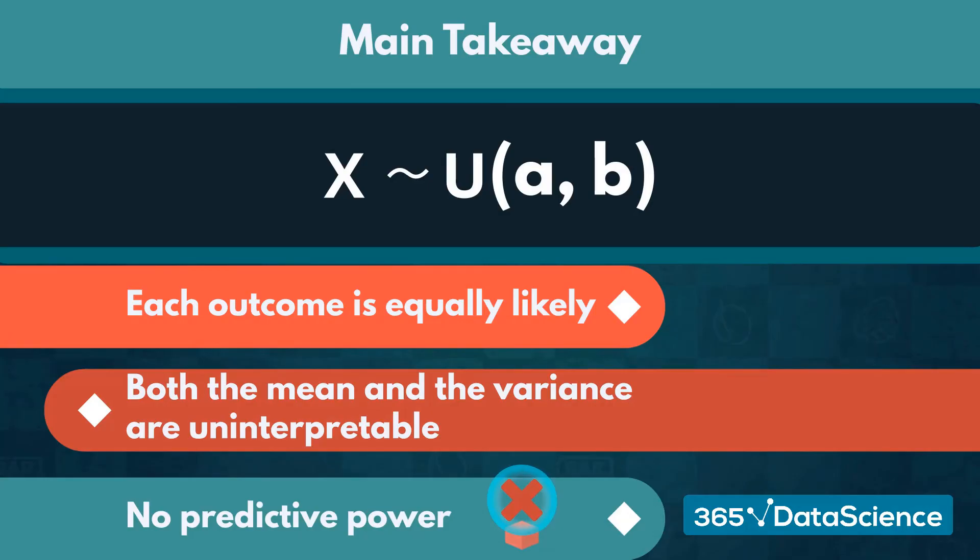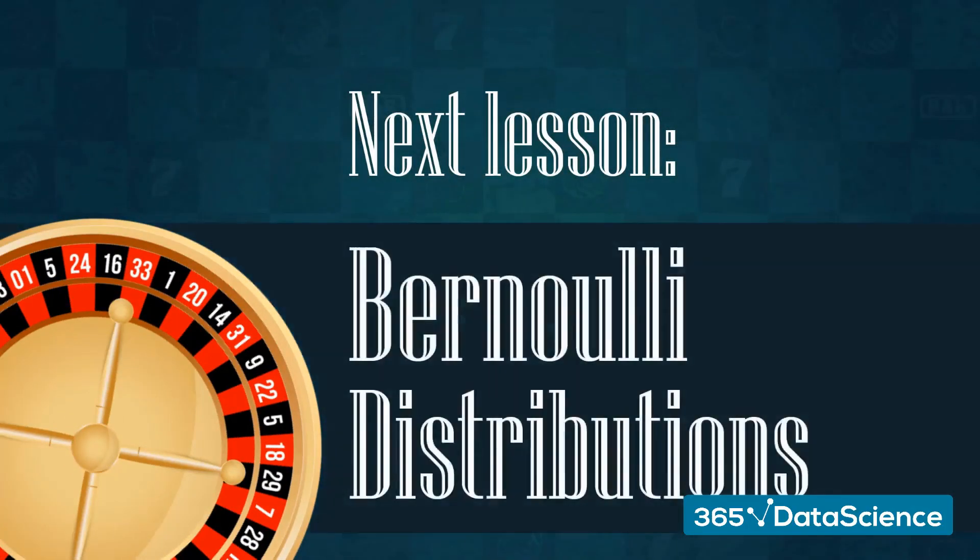Okay. Sadly, the uniform is not the only discrete distribution for which we cannot construct useful prediction intervals. In the next video, we will introduce the Bernoulli distribution.